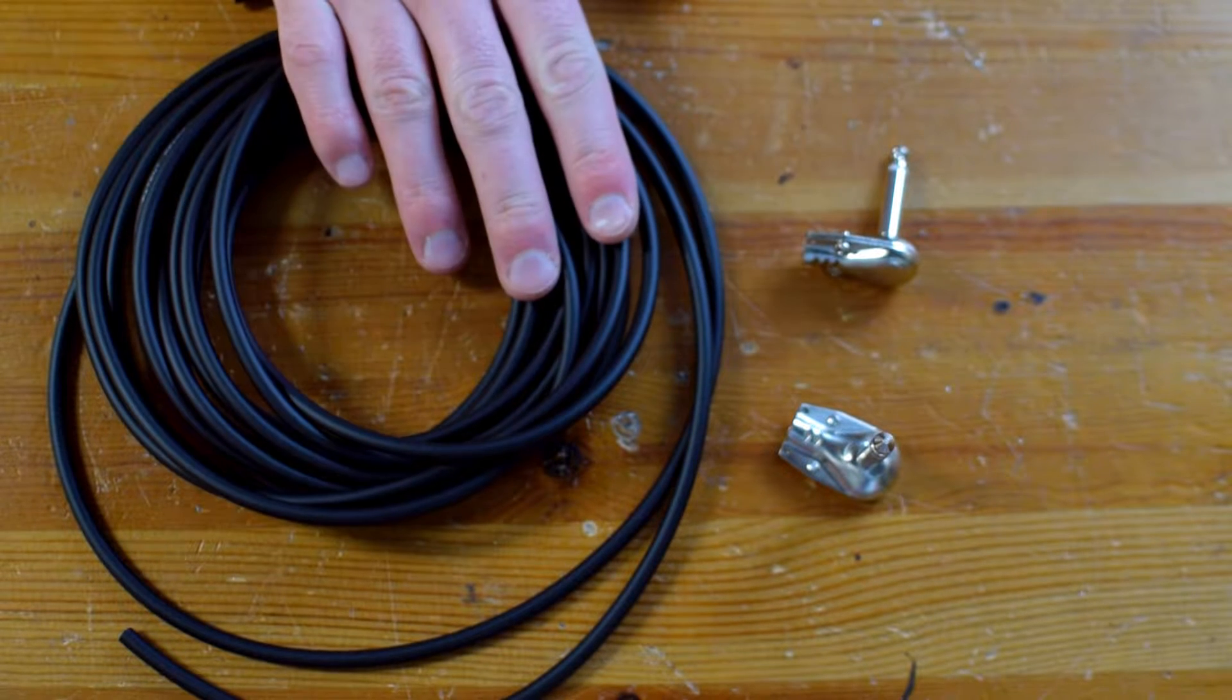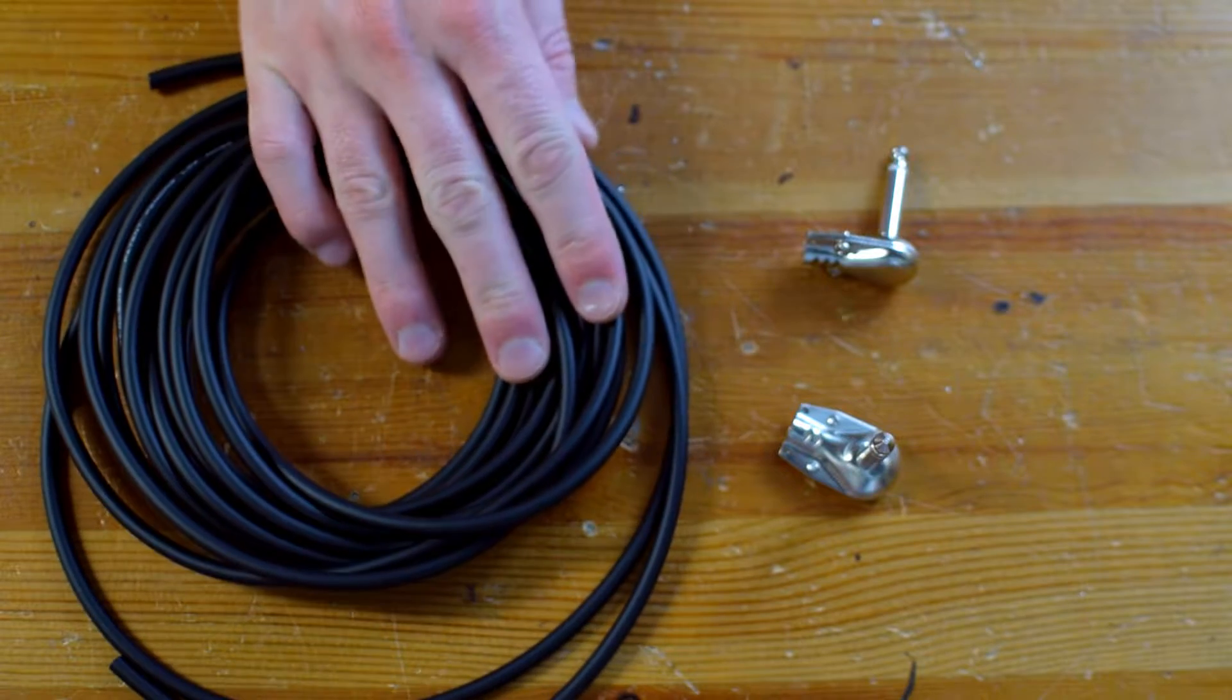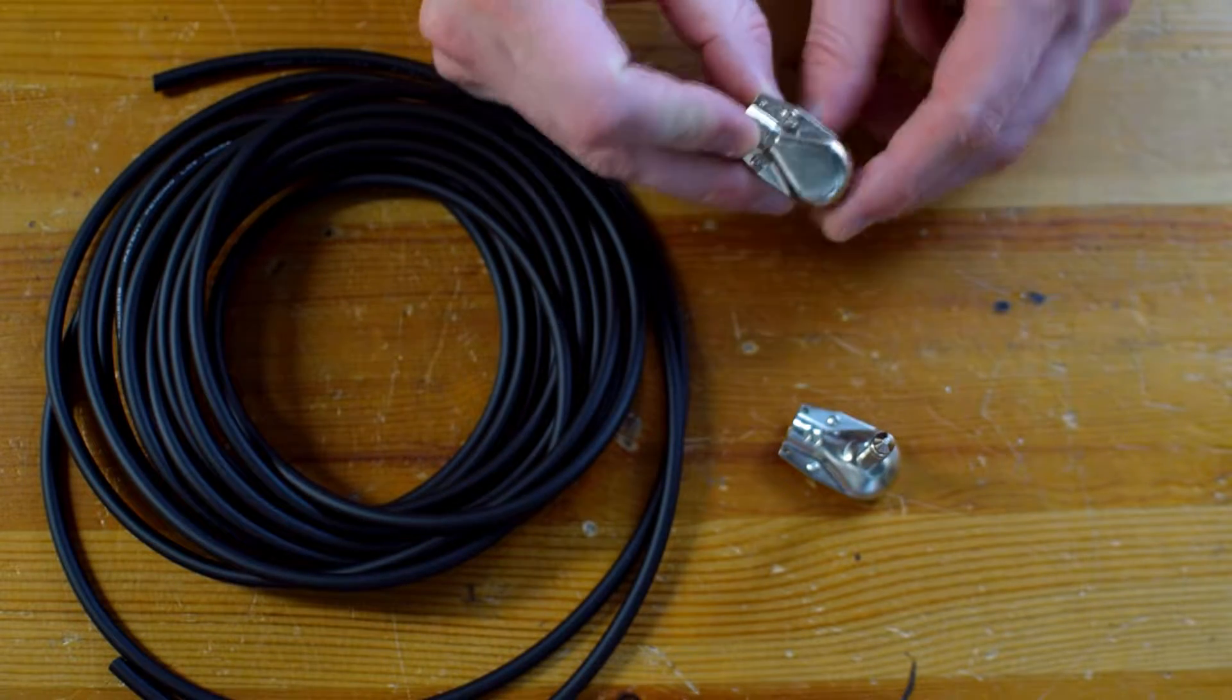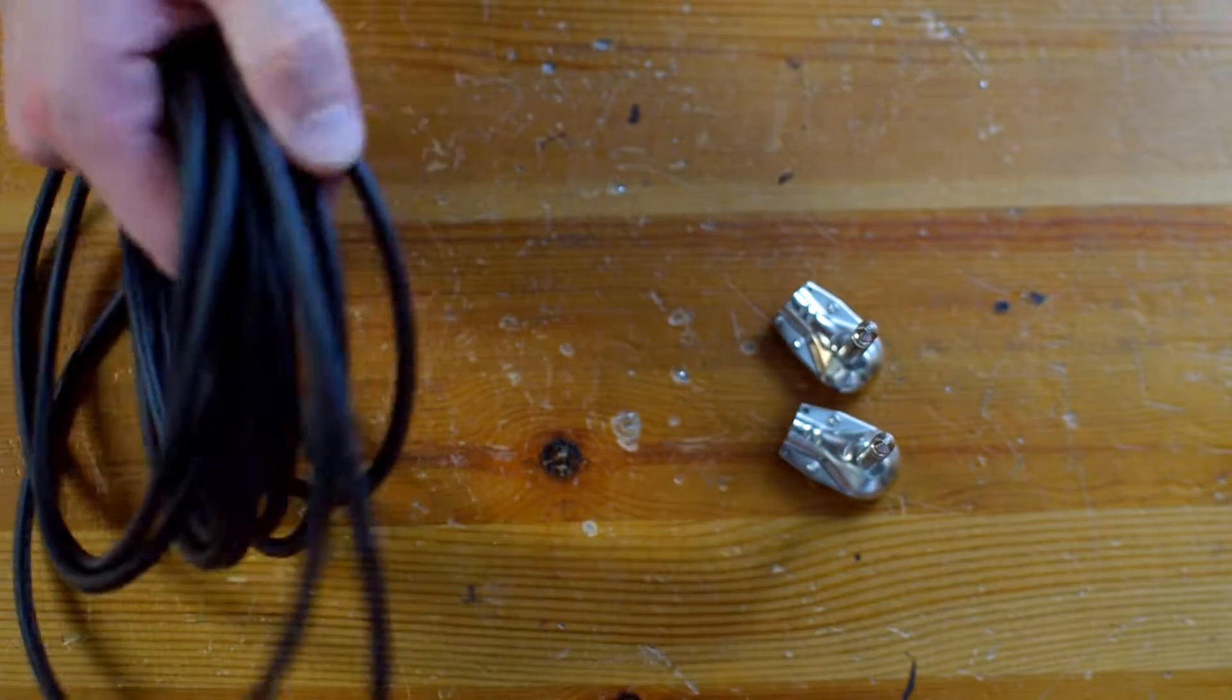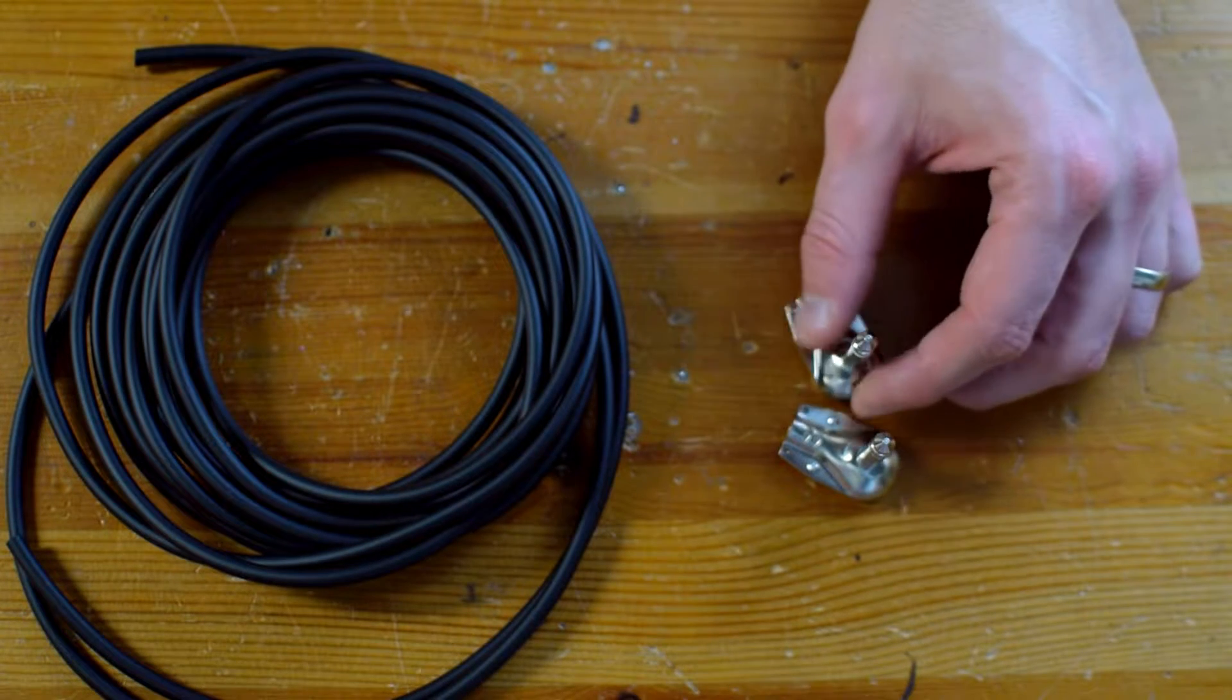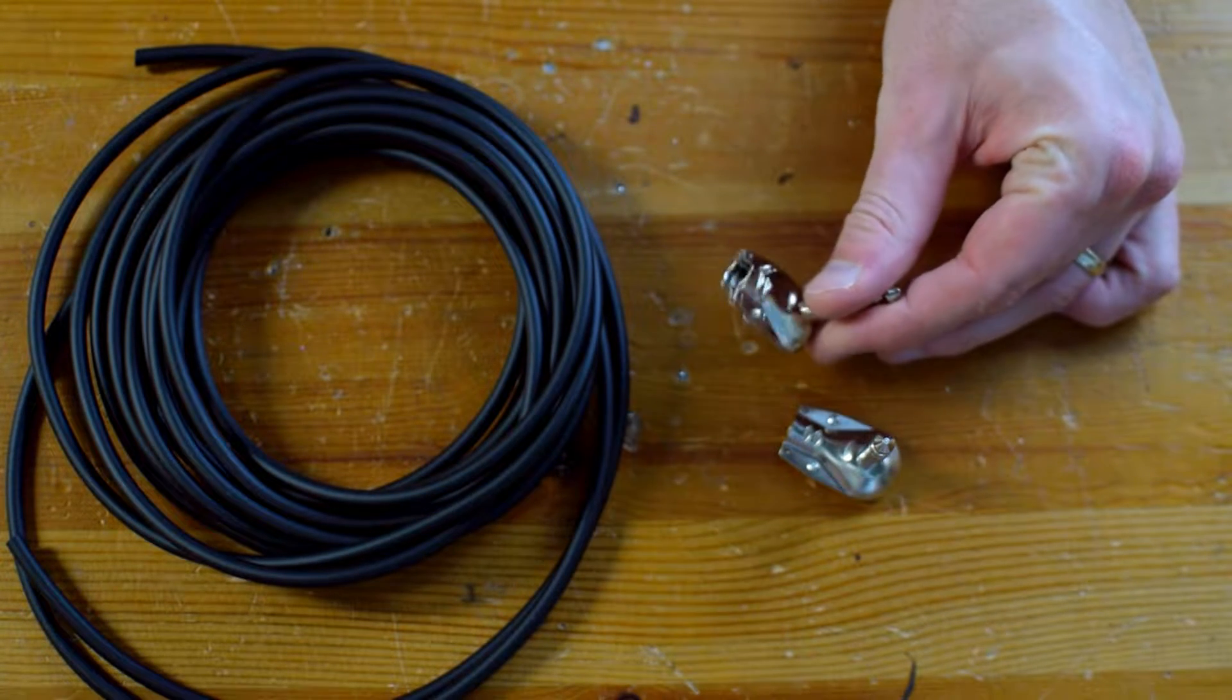So I've got some Mogami 2319 patch cable here and I've got these GLS pancake plugs. Links will be down in the description. I got it off Amazon, it was all pretty inexpensive. I've got a whole bunch of cable here and a whole bunch of plugs. So yeah, let's go ahead and dive in and start building some patch cables.